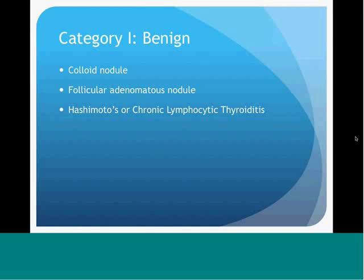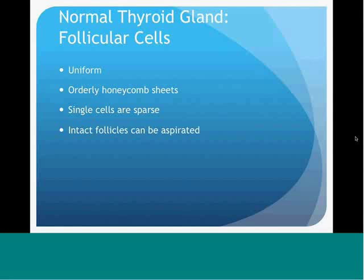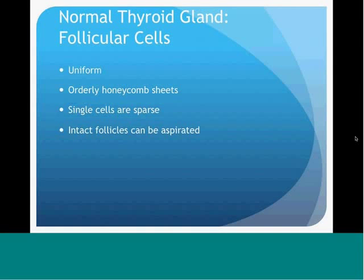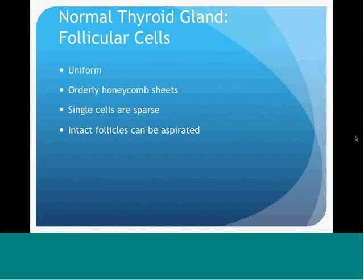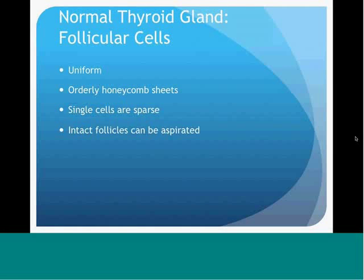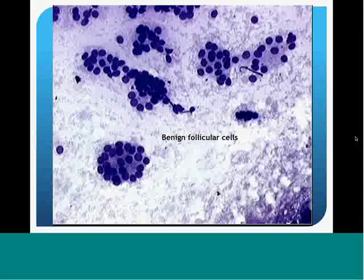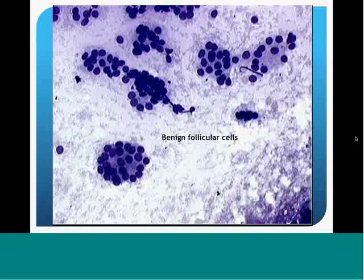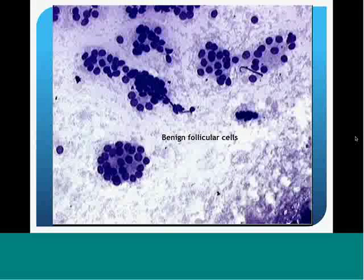Hashimoto's or chronic lymphocytic thyroiditis is also in the benign category. What are benign follicular cells? These are small, uniform follicular cells with honeycomb sheets, meaning they are spaced apart evenly and appear in sheets. Rarely you see single cells, but single cells do appear on a regular basis. Sometimes you can aspirate intact follicles.